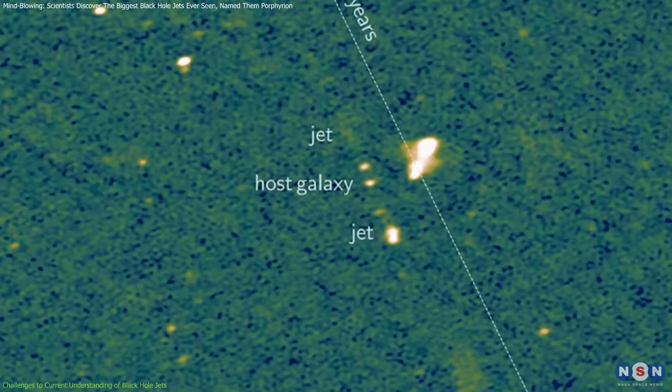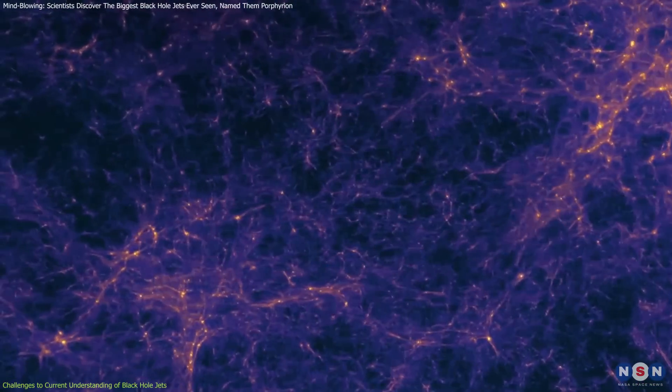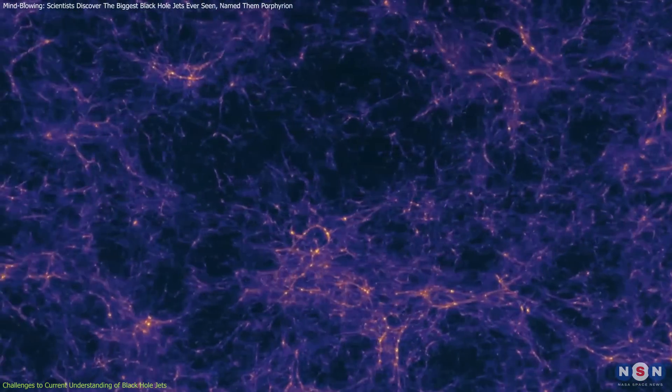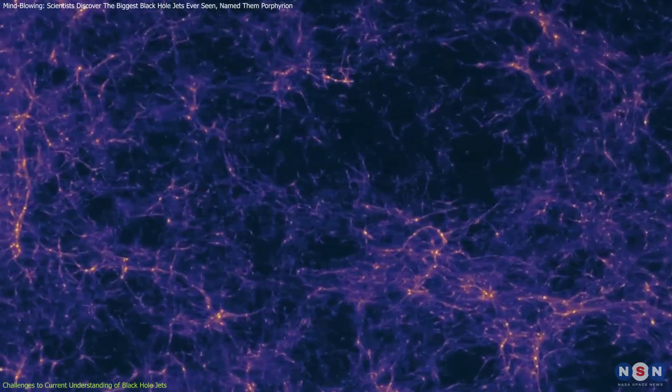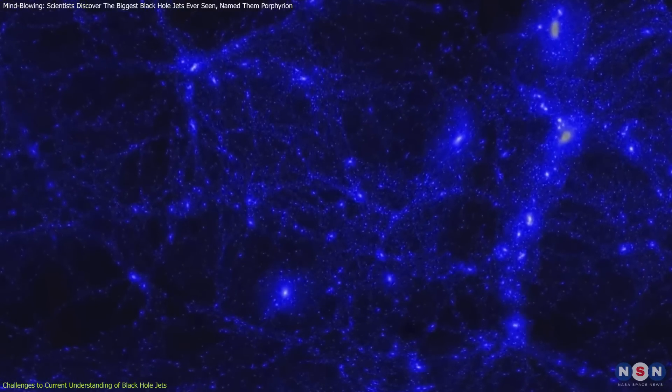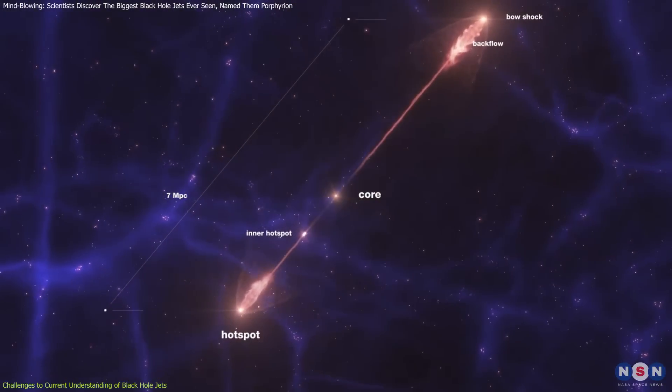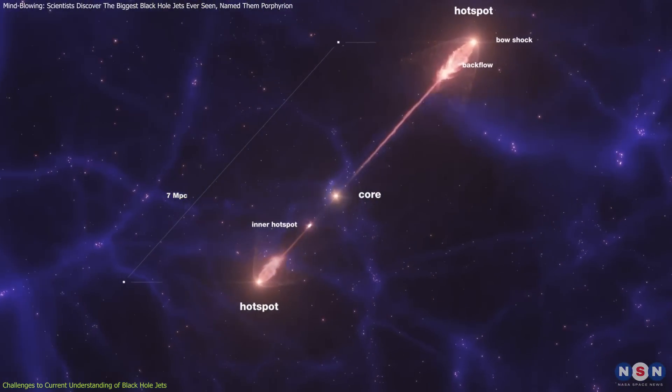Porphyrion formed around 6 billion years ago, during a time when the cosmic web, a dense network of gas and dark matter connecting galaxies, was far more compact than it is today. This ancient and crowded environment likely played a crucial role in its enormous scale, allowing its jets to extend much farther than would be possible under the current conditions of the universe.